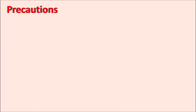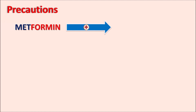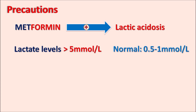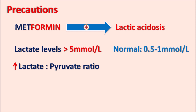One of the most important precautions with metformin is lactic acidosis. Normally, lactic acid levels range from 0.5 to 1 millimole per liter. With metformin, lactate levels may exceed 5 millimoles per liter. The drug also increases the lactate-to-pyruvate ratio — lactate increases while pyruvate decreases, resembling anaerobic conditions — and anionic gap acidosis is also increased. This must be carefully monitored.